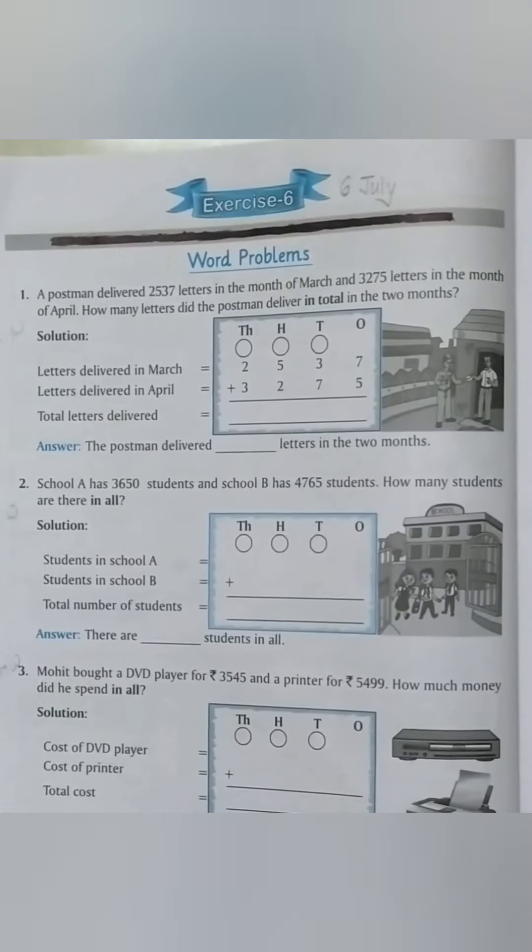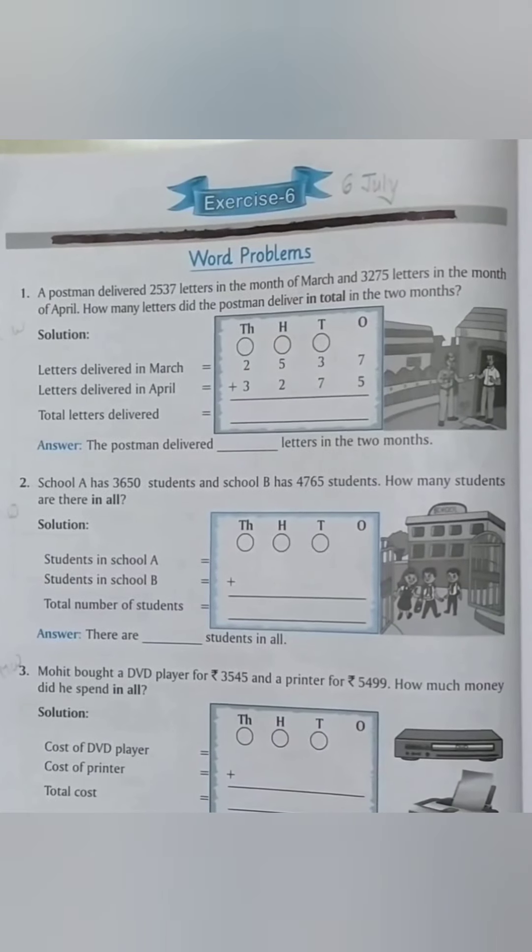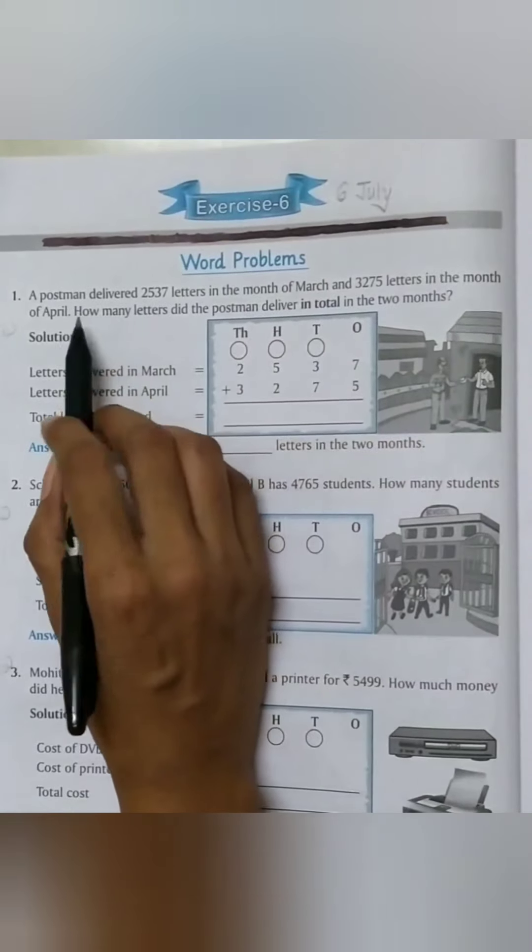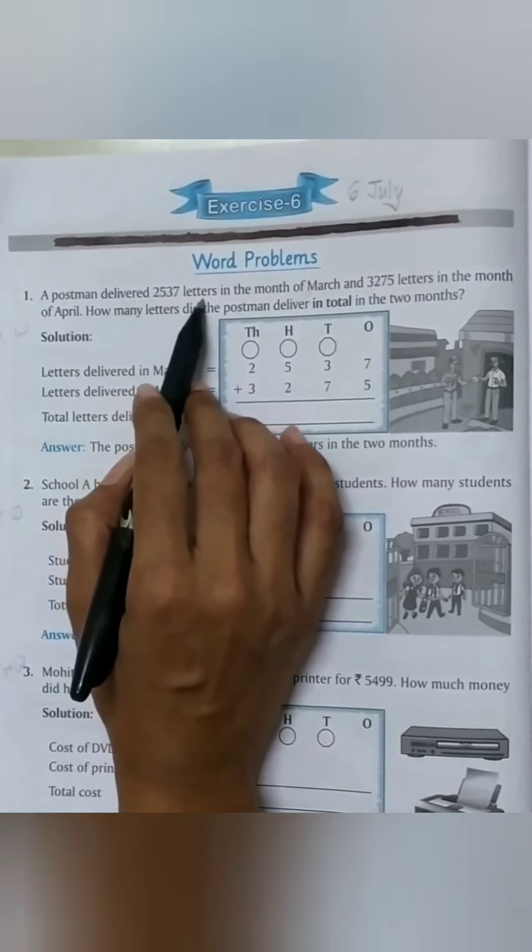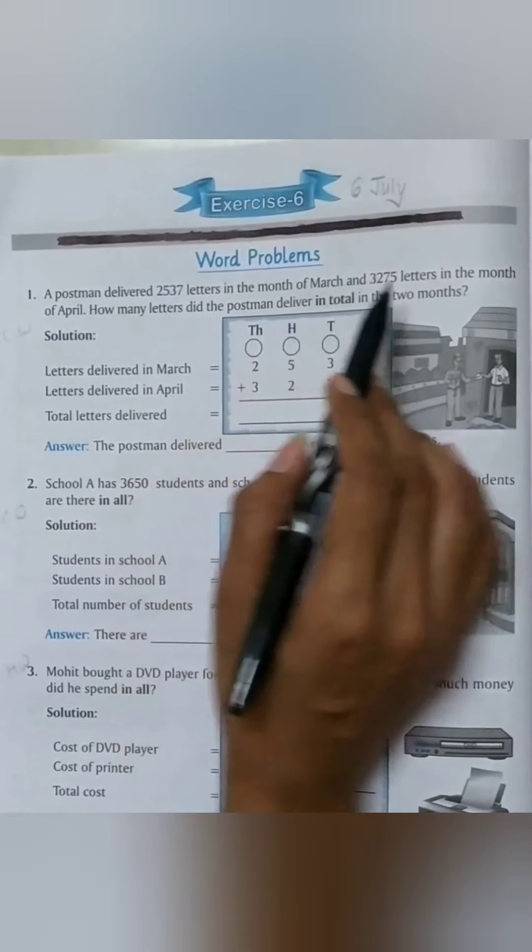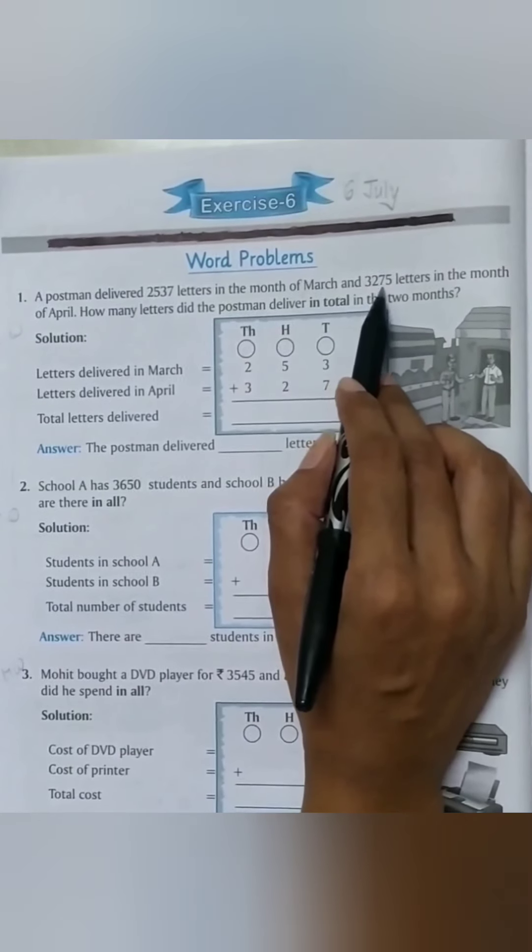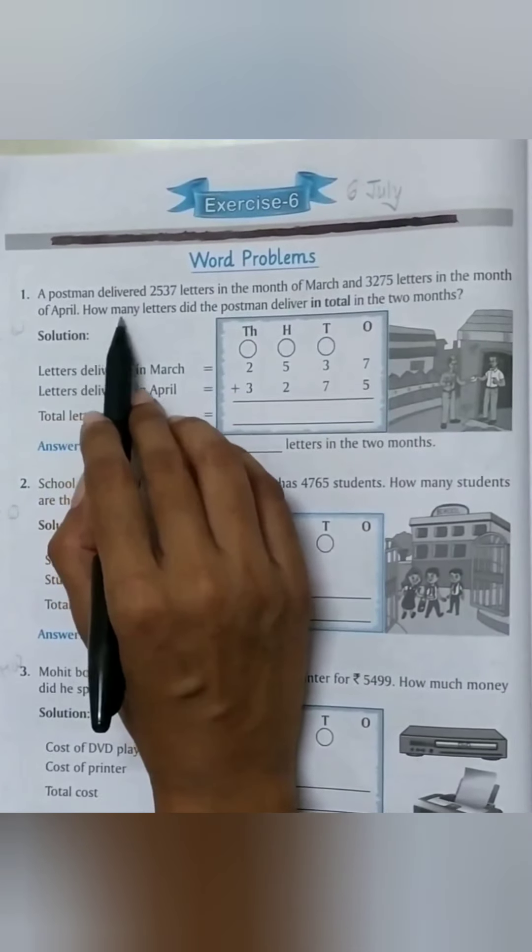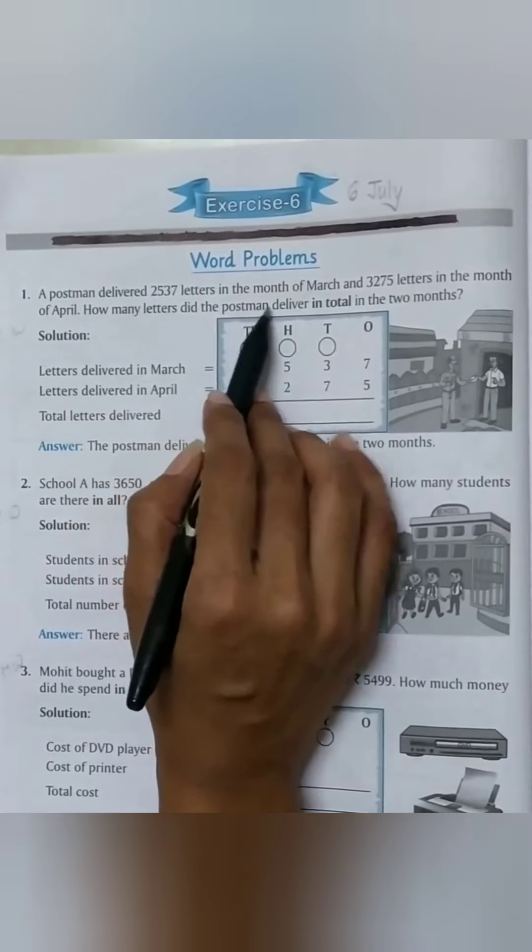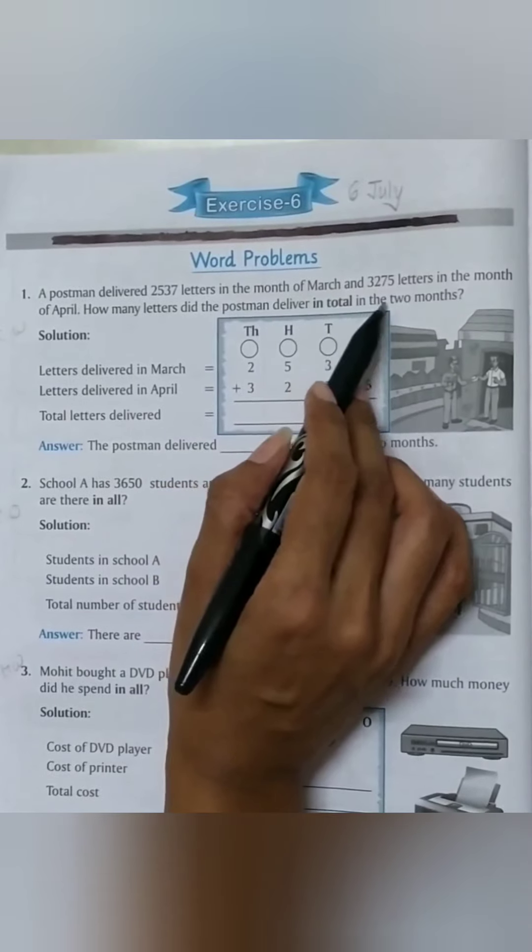Chapter 4, Exercise No. 6: Word Problems. First question: A postman delivered 2537 letters in the month of March and 3275 letters in the month of April. How many letters did the postman deliver in total in the two months?